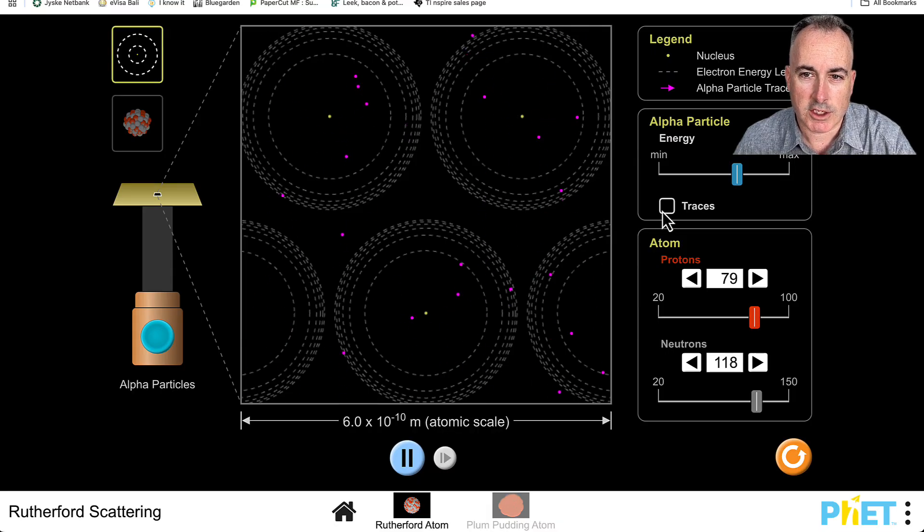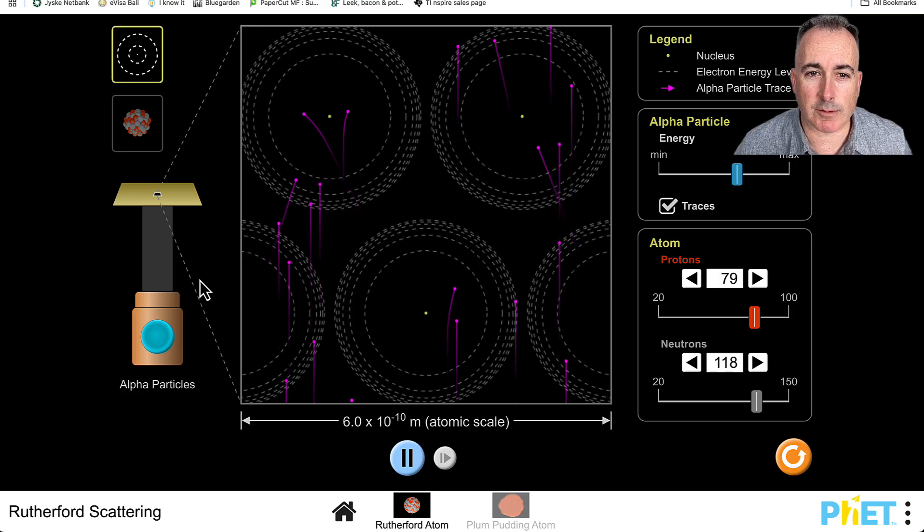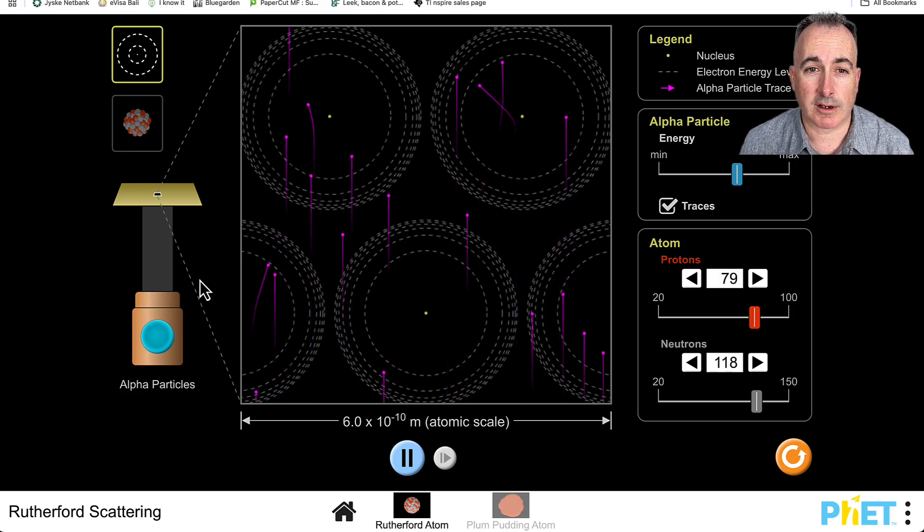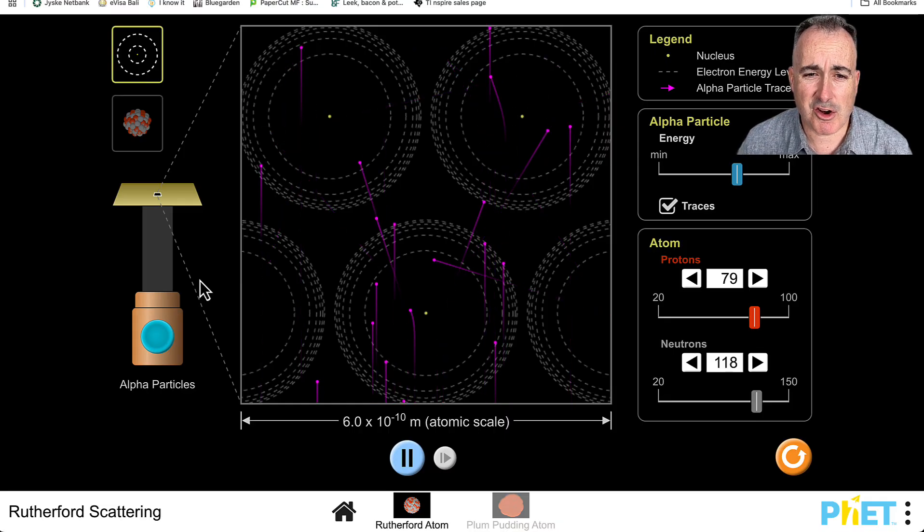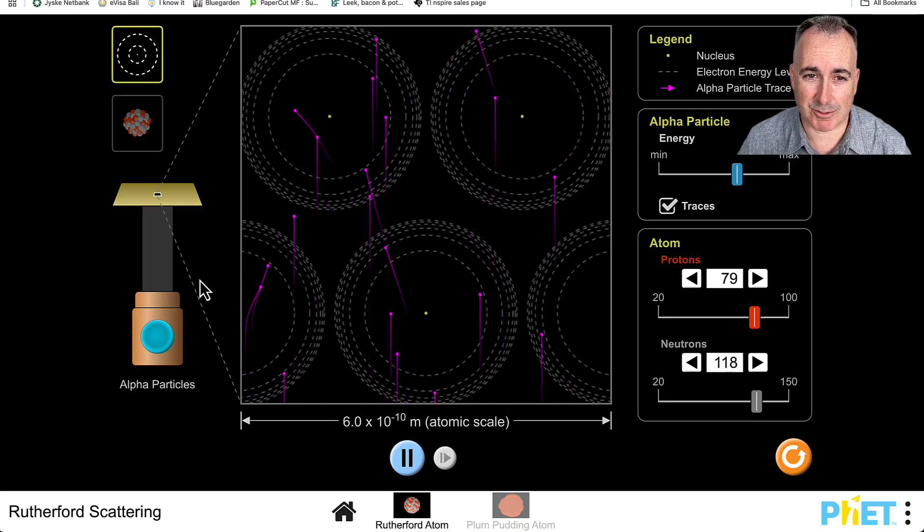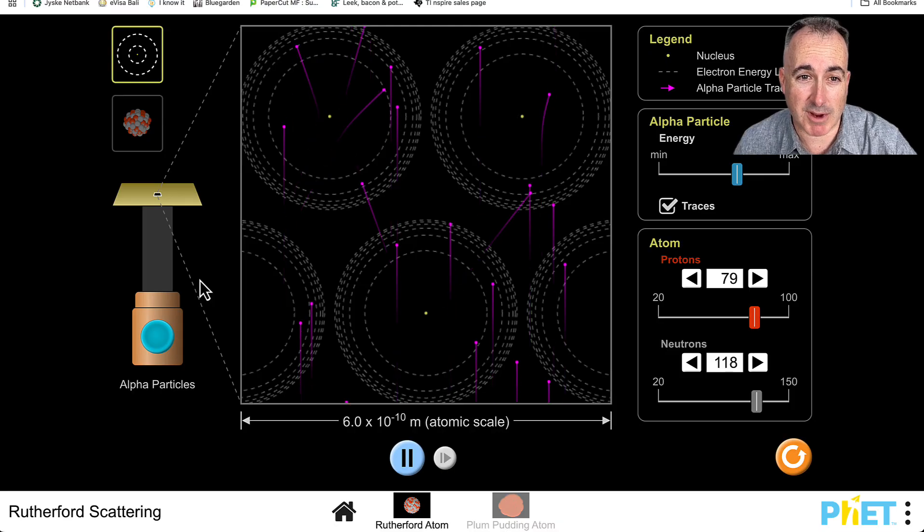If we do the traces, it's more fun to see them. These particles—some of them are actually bouncing straight back, which if the atom was a plum pudding, there's no way that should happen. That's why this is a really important experiment.